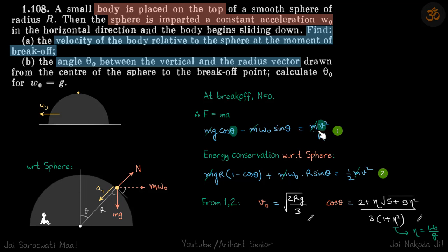Now we will find the velocity from energy conservation because the sphere is smooth. We need to do energy conservation with respect to the sphere. When we take pseudo force into account, we can always conserve energy with respect to the observer, so we have to write the work of the pseudo force as well.